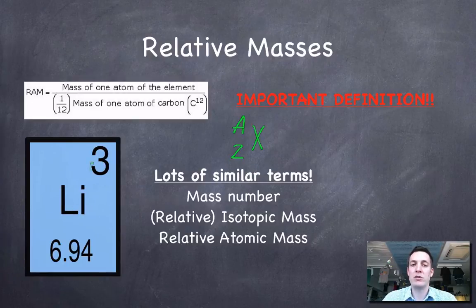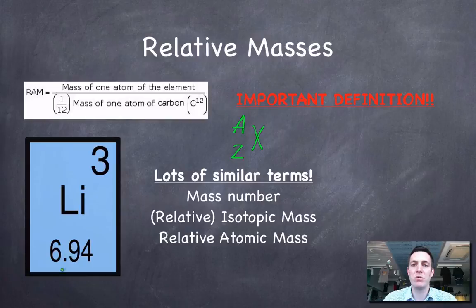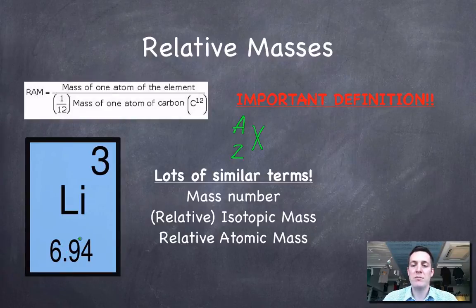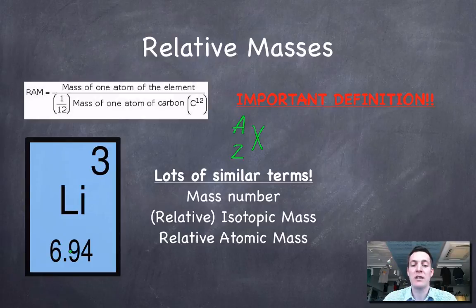So here's lithium with its proton number or its atomic number of three. It's got a relative atomic mass of 6.94. Now this is not to say that the mass number of lithium is 6.94. What this means is that the average mass of a lithium atom, bearing in mind all its different isotopes, is 6.94.